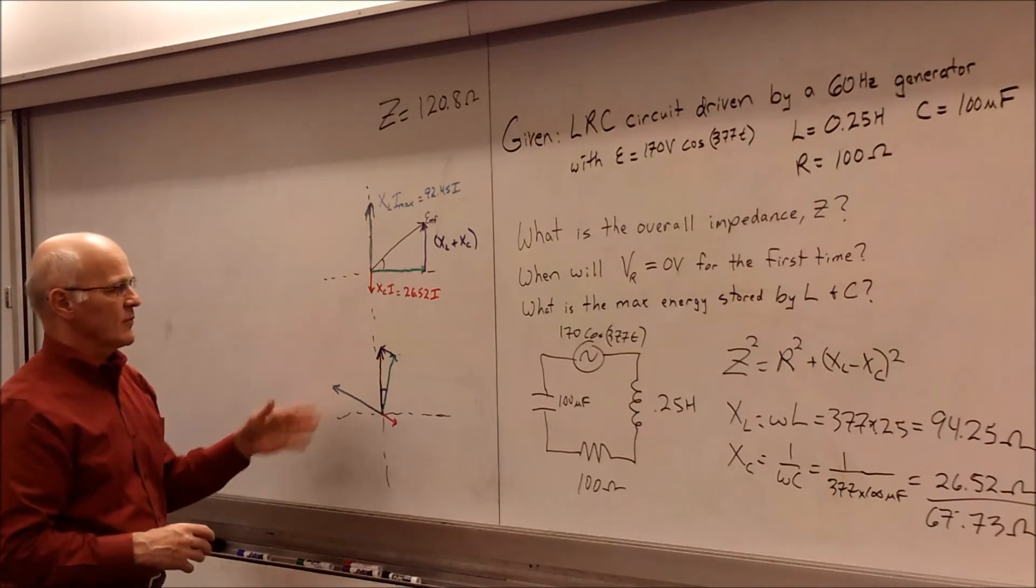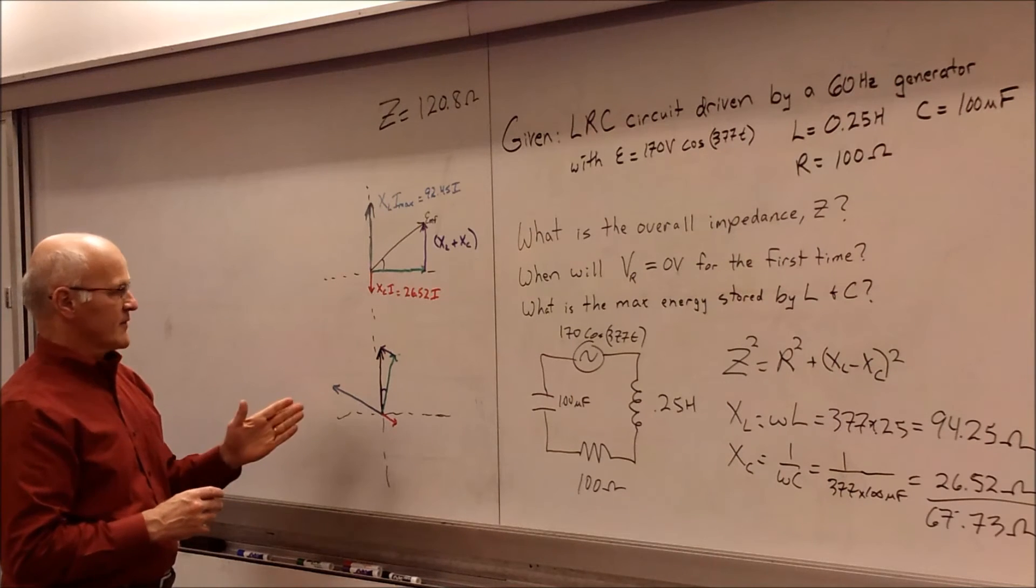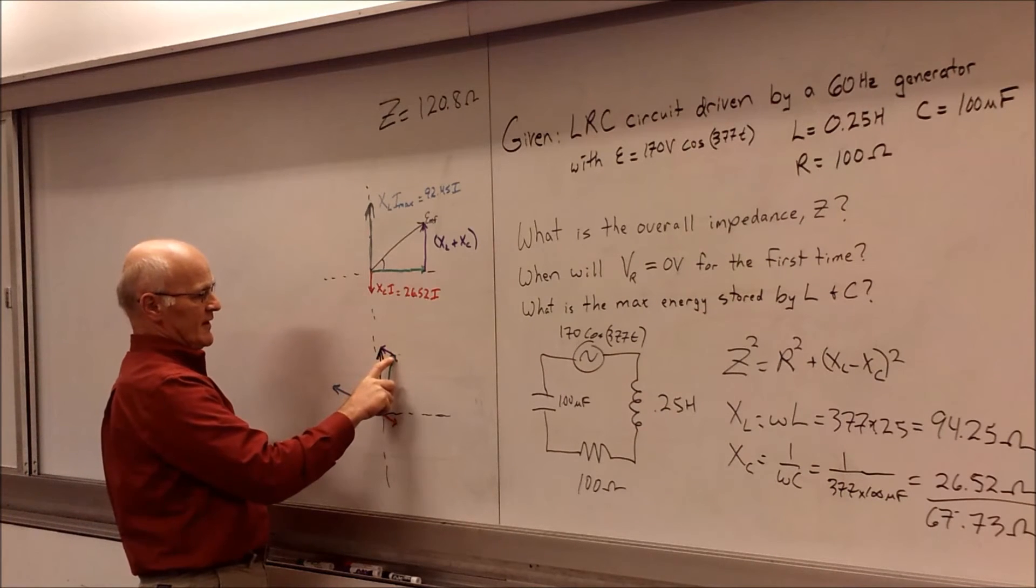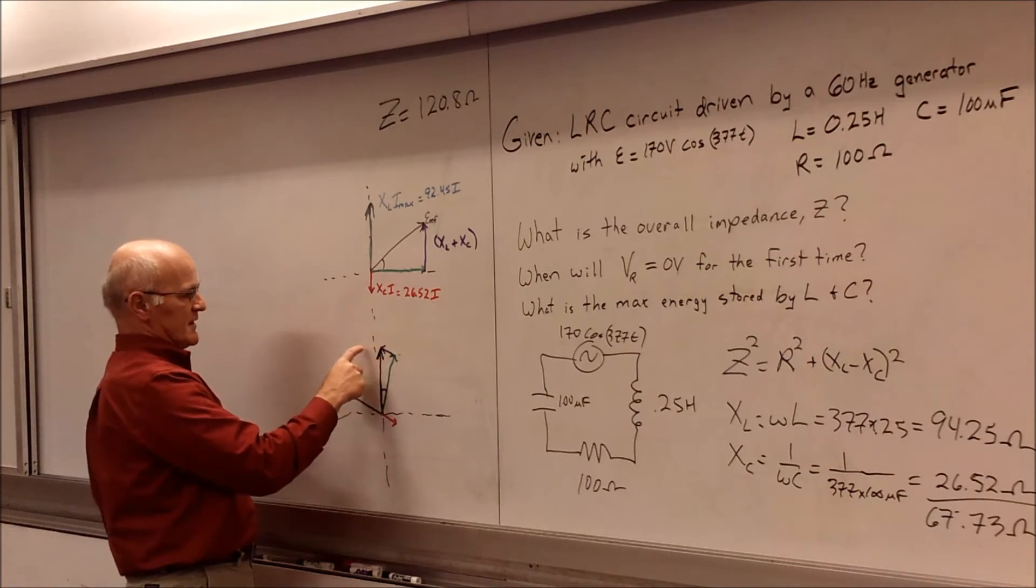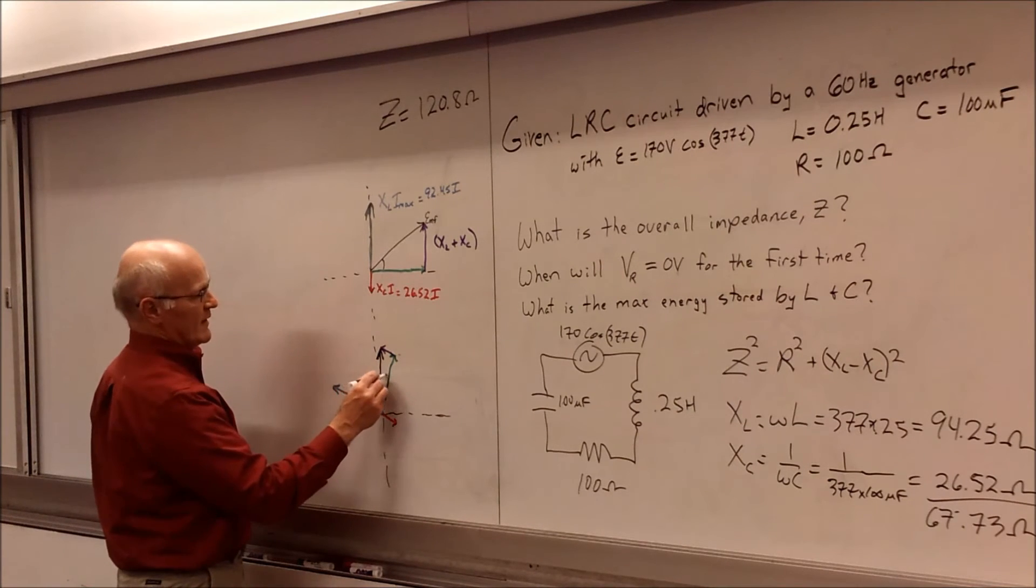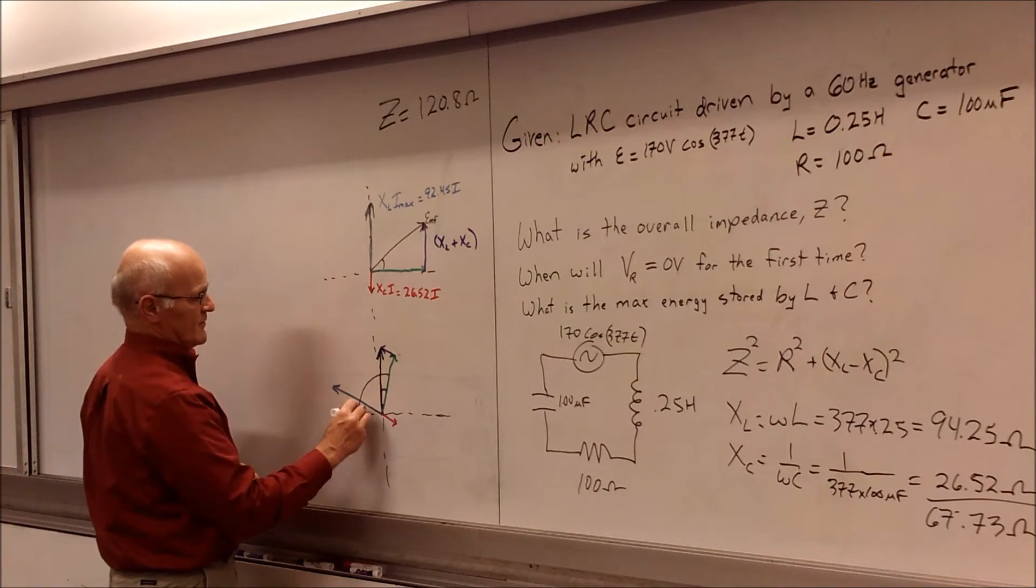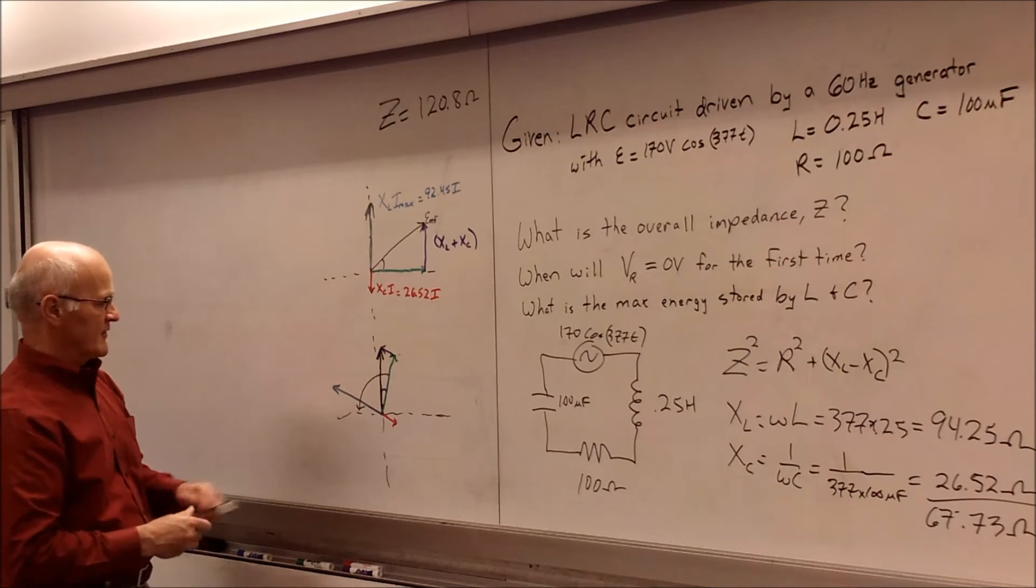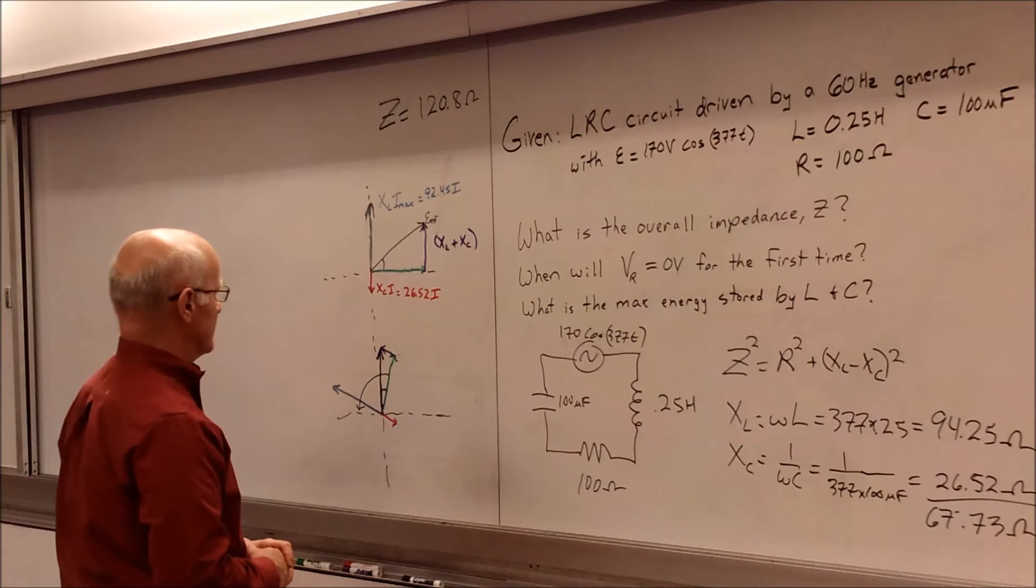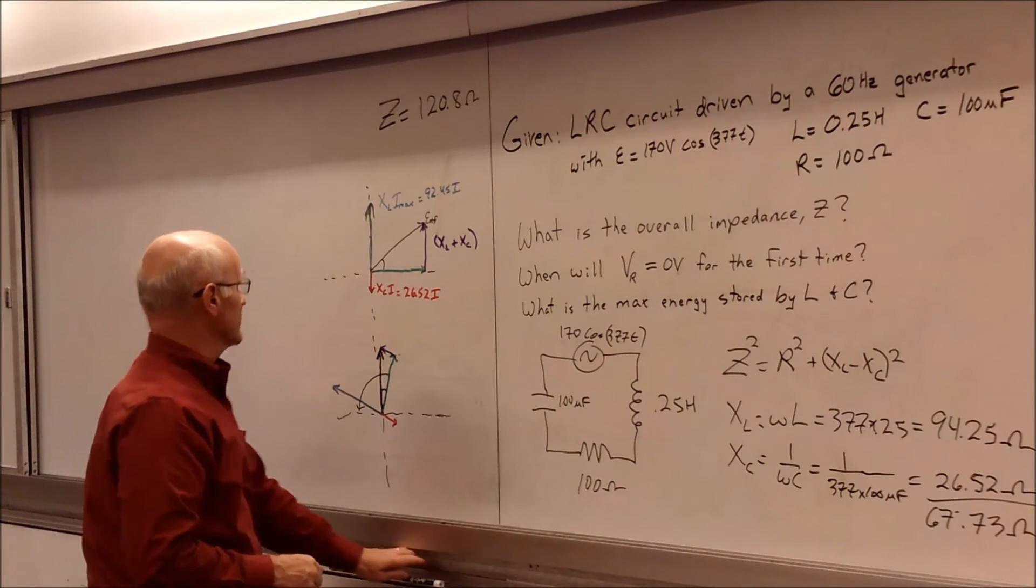And so now what we're asking is when is the resistor voltage going to be zero for the first time. So this is our resistor voltage. So we have to wait for this thing to rotate. And when it gets all the way over to here, that's going to tell us when it's going to be zero for the very first time. So what's important for answering this question is we have to have that phase angle. And so we have to have an equation that figures out what the phase is going to be.